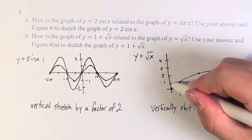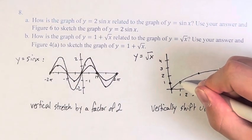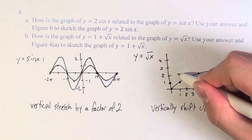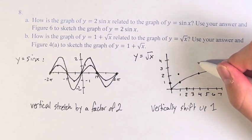So 0, 0 is moved up to 0, 1. 1, 1 is moved up to 1, 2. And 4, 2 is moved up to 4, 3.